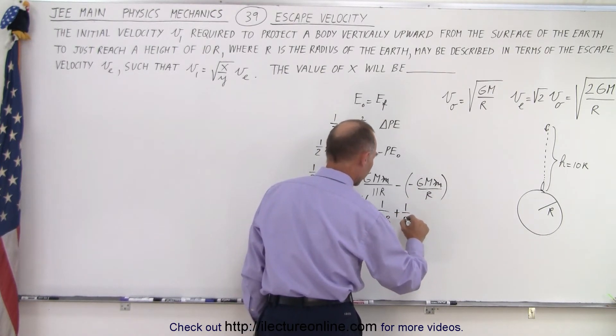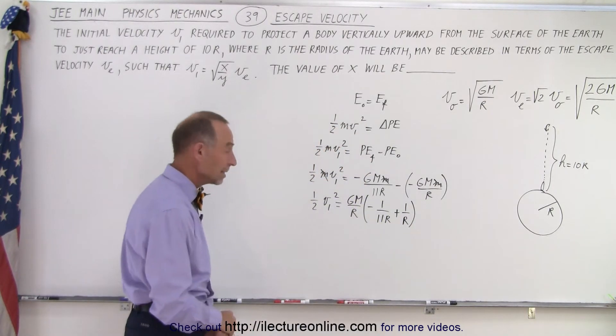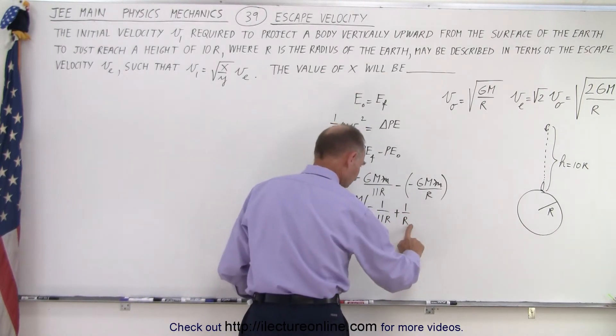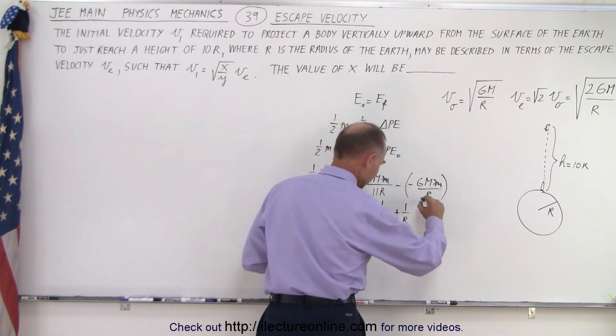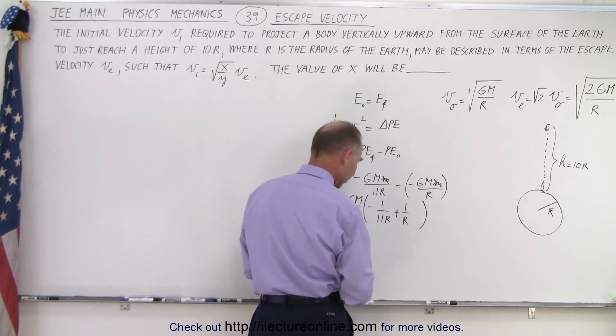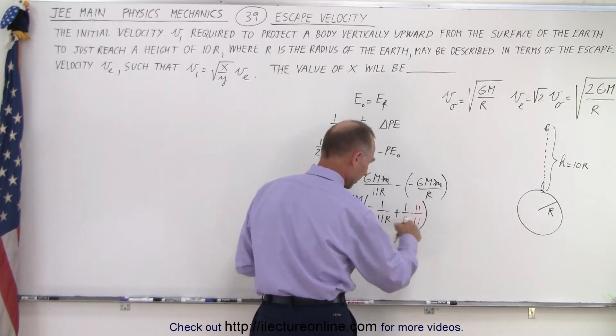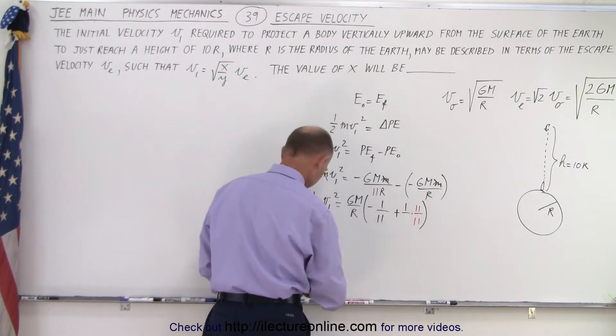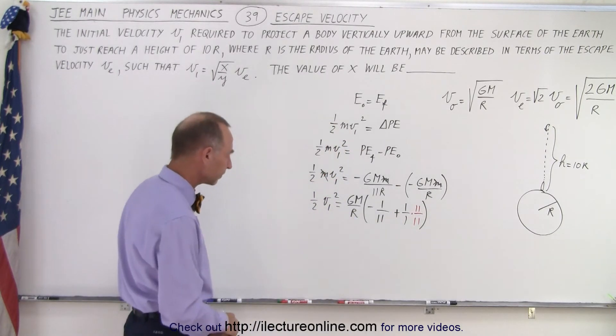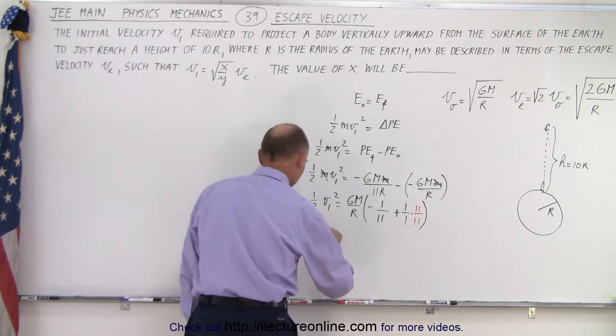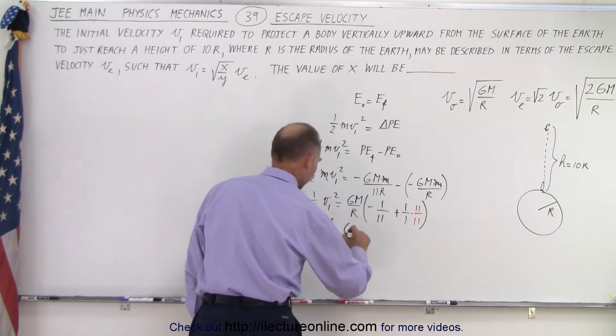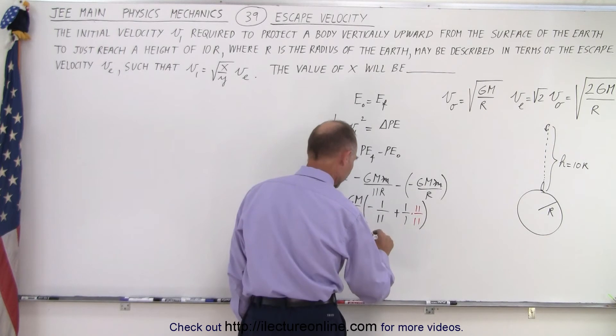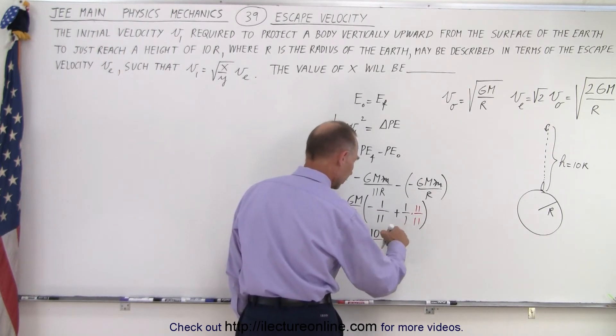That would be 1 over r. Now we need to put that over common denominator of 11r. So multiply this by 11 over 11r so now we have a common denominator. Oh wait a minute, I factored out an r, so it'll be one over one. That means we have one-half v1 squared equals GM over r, and then here we have 11 minus 1 which is 10 over the common denominator of 11.